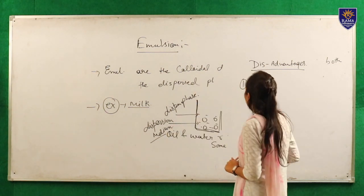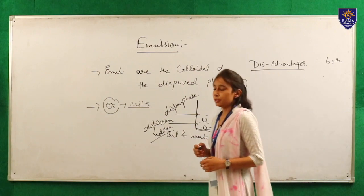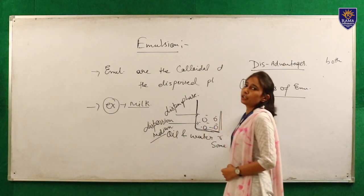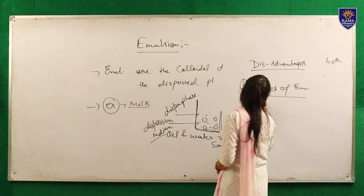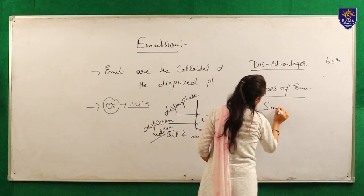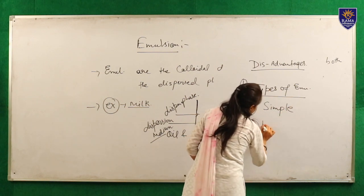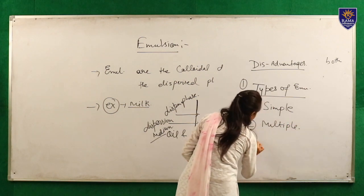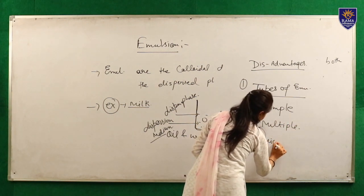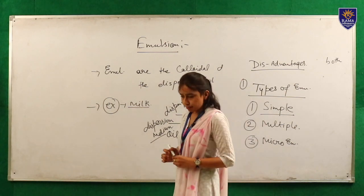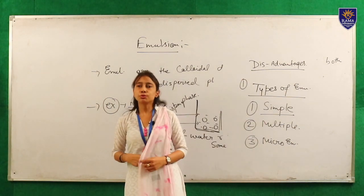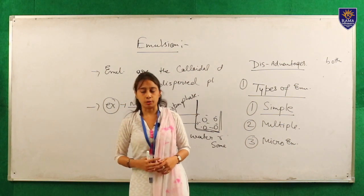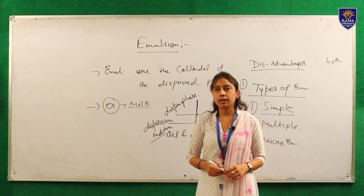Now moving to the types of emulsion. Emulsions are basically divided into three main classes: first is simple emulsion, second is multiple emulsion, and third is micro emulsion. Simple emulsion is divided into two categories: oil-in-water emulsion and water-in-oil emulsion. The globule size is approximately five microns.